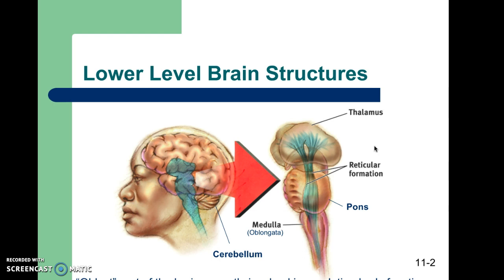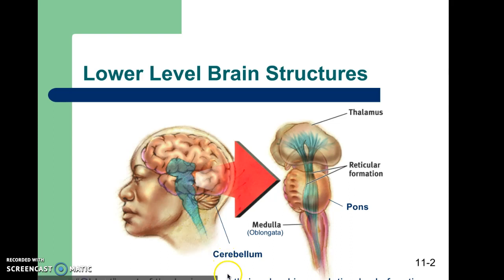I'm going to ask you about these things in the follow-up questions, so you want to be prepared to explain what these things do. As we look at lower-level brain structures, these are labeled 'lower level' in part because they are seated lower in the brain — their position in your cranium is lower than the cerebral cortex, for example. But they're also given that term because they handle simpler functions, regulating bodily functions that are automatic in nature and important for automatic, survival-based kinds of things.